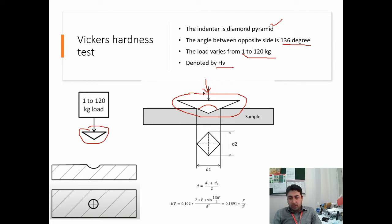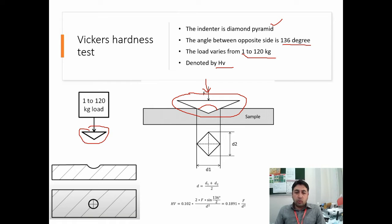Once we complete the test, we have to measure two diameters, D1 and D2, from the diamond-shaped dent. If you look at the dent using a microscope, you will see these two diameters. Usually the shape is symmetrical so both distances should be the same. But even if they are not the same, we take the average of the two and use one D value in the Vickers hardness formula to find the hardness number.